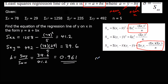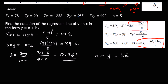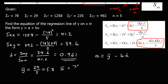And a is going to be ȳ minus b times x̄, so let's get ȳ and x̄. The mean of the y's is the sum of y divided by how many, so ȳ is 29 over 5, which is 5.8. And x̄ is 78 over 5, which is 15.6.